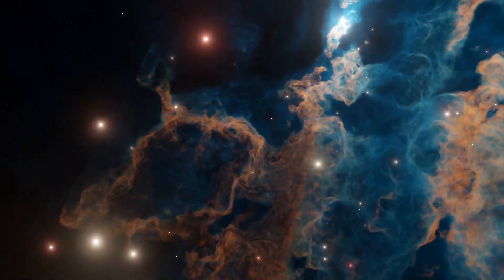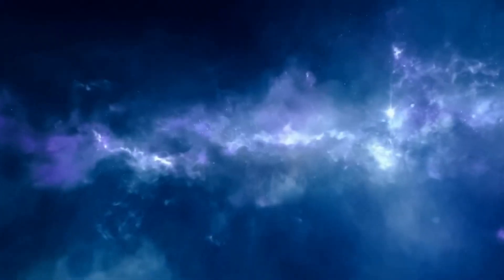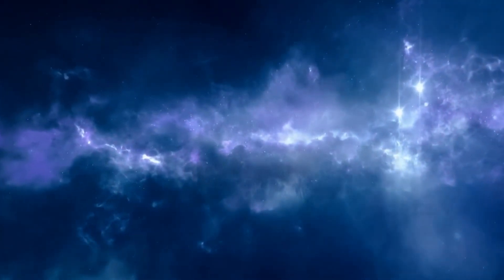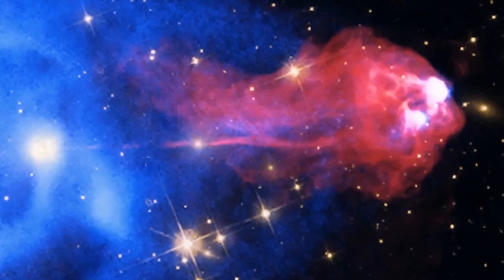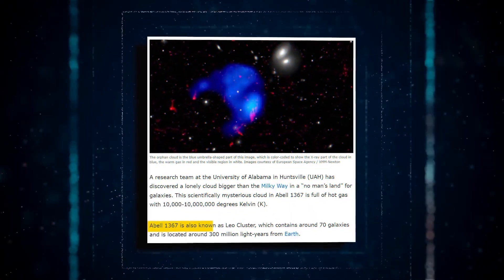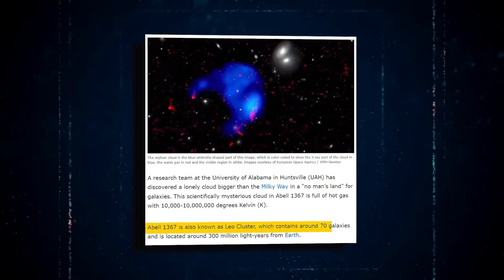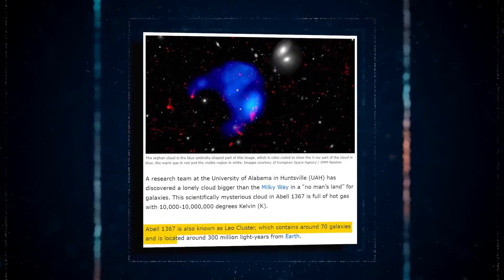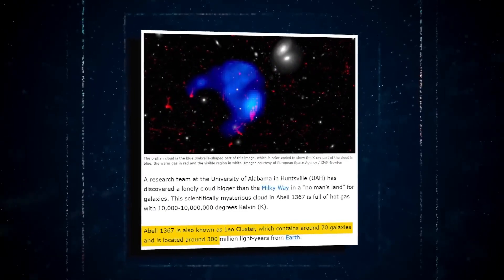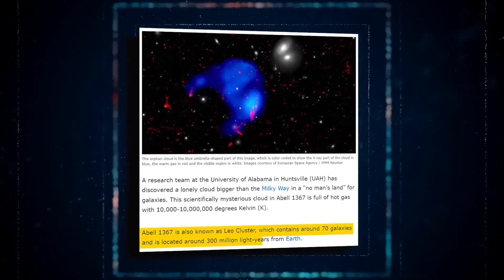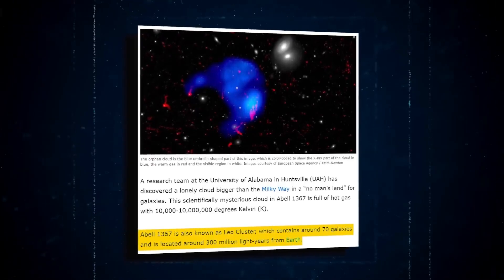The moving cloud was thought to have been torn from a galaxy because of its temperature, which is similar to gas found within galaxies. Dr. Ming added that the cloud was found in the Abel-1367, or Leo, galaxy cluster, which has about 70 galaxies and is situated roughly 300 million light-years from Earth.